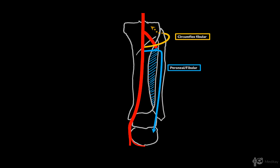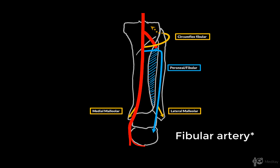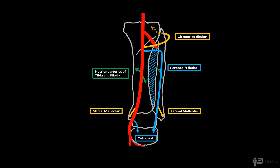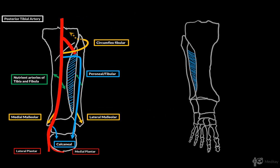Another side branch is the medial malleolar artery for the medial malleolar network on the ankle, and the lateral malleolar artery from the tibial artery for the lateral malleolar network. Then there's the calcaneal branch to form the arterial network over the calcaneus. So the posterior tibial artery gives off the calcaneal branch, and the fibular artery terminates as the calcaneal artery. The last branches are the nutrient branches for the bone marrow — both the fibular artery and the posterior tibial artery have these branches.